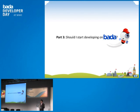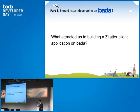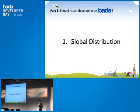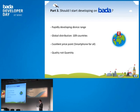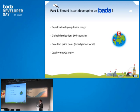You've seen some of the things going on today. Should I start developing on Bada? It's a big question. So what attracted us to building a Scatter client application on Bada? Well, firstly, global distribution. They do have a rapidly developing device range, as we've seen with new product launches. The fact that you've got 109 countries to distribute to — you can pick and choose where you want to publish your application. We also looked at smartphones and the cost of acquisition from a user's perspective. The great thing about Bada was an excellent price point into the market, allowing expansion beyond iPhone and early Android devices. And I would say quality, not quantity — the QA processes are great.